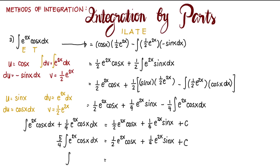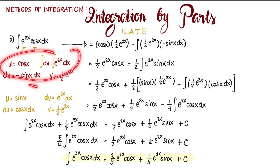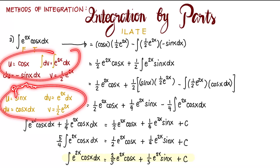We divide the entire thing by 5/4. So the integral of e to the power of 2x cosine x dx equals — 1/2 divided by 5/4 is 2/5 — so 2/5 e to the power of 2x cosine x, plus 1/4 divided by 5/4 equals 1/5 — so 1/5 e to the power of 2x sine x, plus C. This is our answer. As you can see, we performed integration by parts twice, which is possible when we still get an exponential-trig product in our resulting integral.